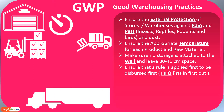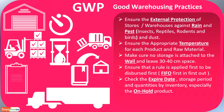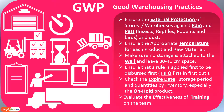The GWP also ensures that the rule of first in, first out — FIFO — is applied: the first to arrive is the first to be dispersed. GWP also helps us check expiry dates, storage periods, and quantities through inventory checks, especially for on-hold products. It also covers the evaluation of the effectiveness of training the team on good warehousing practices.